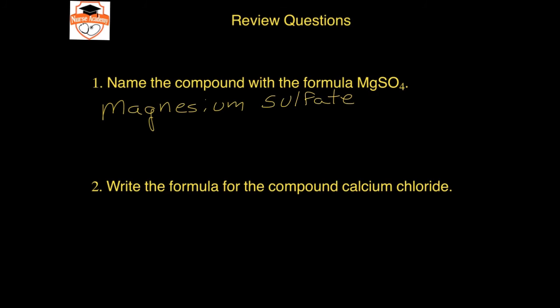For number two, write the formula for the compound calcium chloride. Calcium is on the left-hand side of the periodic table, indicating that it's a metal. So we're going to use the ionic naming system and determine its charge. Calcium forms the plus 2 charge. Chlorine forms a minus 1 charge. So in order for their charges to add up to 0, I'm going to have 1 times positive 2 plus x times negative 1 equals 0. My x is going to have to be a 2, so I would have CaCl2 as my formula for this.